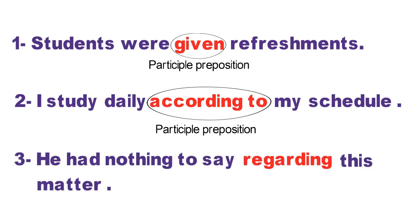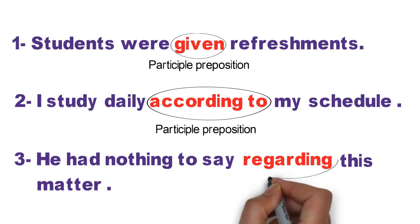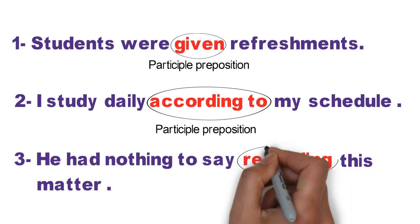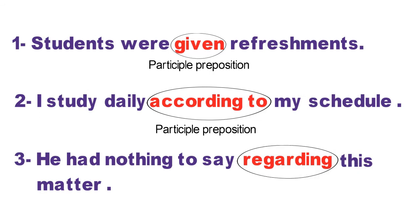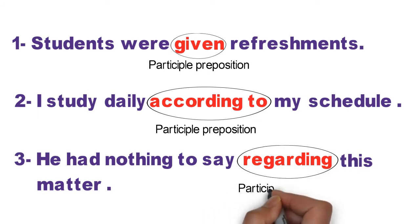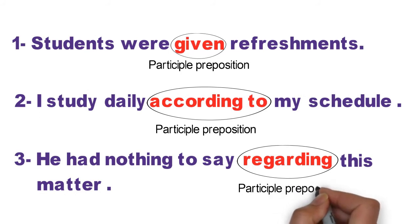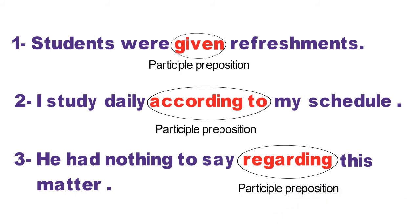Third sentence: He had nothing to say regarding this matter. Is mamle mein unke paas kehne ke liye kuch nahi hai. Is sentence mein 'regarding' word ka use hua hai, jo ki ek verb hai definitely, but yahan par yeh ek connector hai, isliye ise bhi hum participle preposition kahenge. I hope students, participle preposition ke yeh examples aapko zaroor samajh mein aaye honge.